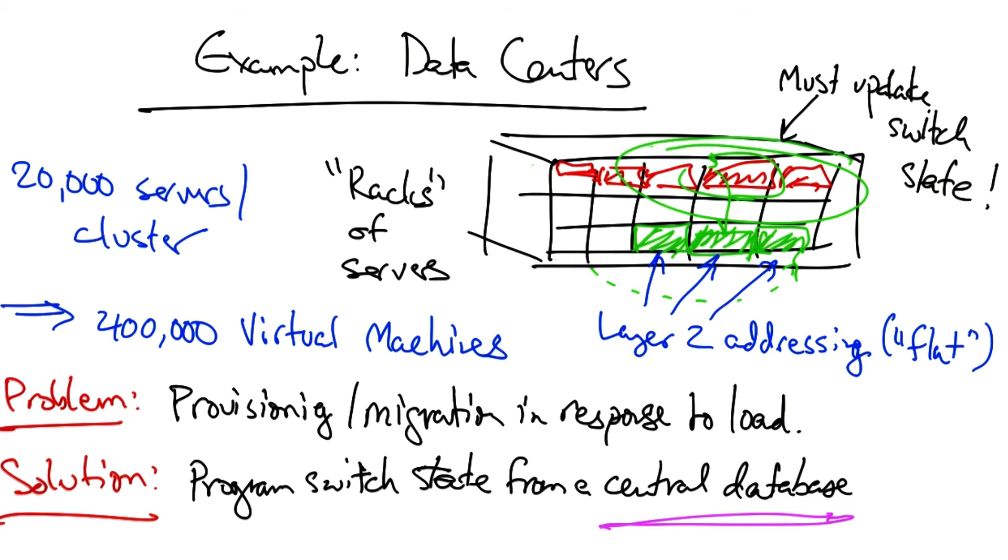This type of migration is also made easier by the fact that the servers are addressed with layer 2 addressing, and the entire data center looks like a flat layer 2 topology.